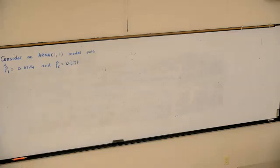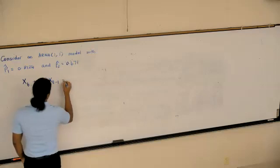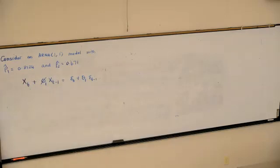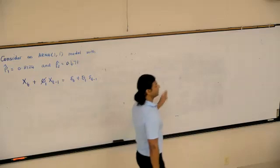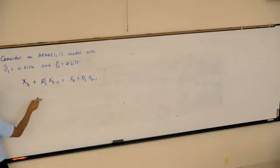So ρ₁ = 0.8124 and ρ₂ = 0.471 is given. But we want to fit an ARMA(1,1) model. The model that we have is Xₜ = φ₁Xₜ₋₁ + εₜ + θ₁εₜ₋₁. That's what we use. So we want to know what φ and θ are, but the autocorrelation values are given to us. We looked at the ACF plot, we got these autocorrelation values, and I'm telling you these values were generated from an ARMA(1,1).